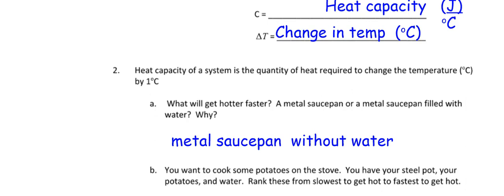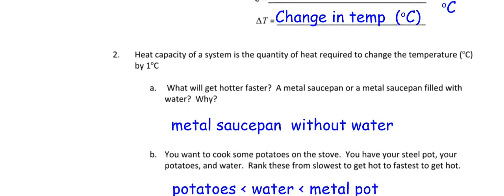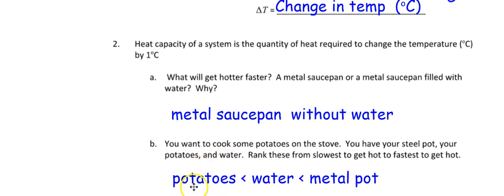The metal pot heats up fastest, then the water, then the potatoes — so the potatoes are the slowest to heat up. When you cook potatoes, heat from your stove heats the metal pot first through conduction, then the water heats up, and once the water is hot the potatoes start cooking. The water heats up before the potatoes get hot. Water is kind of special here.